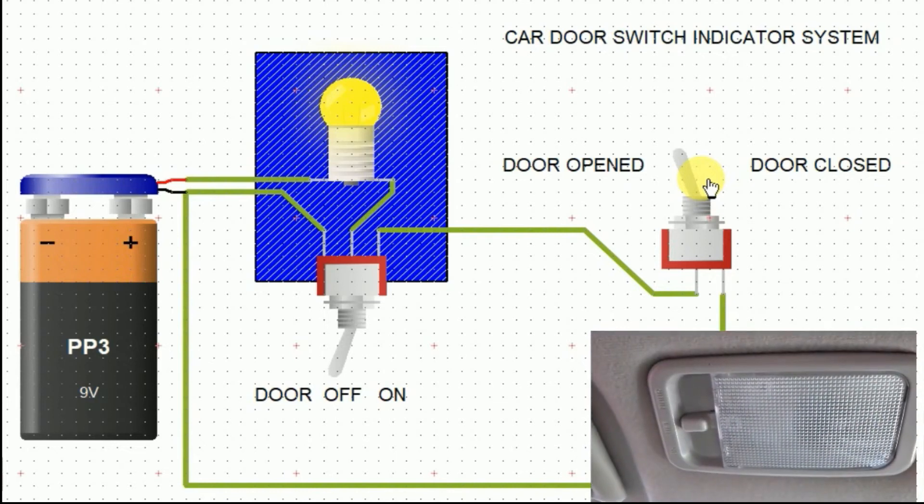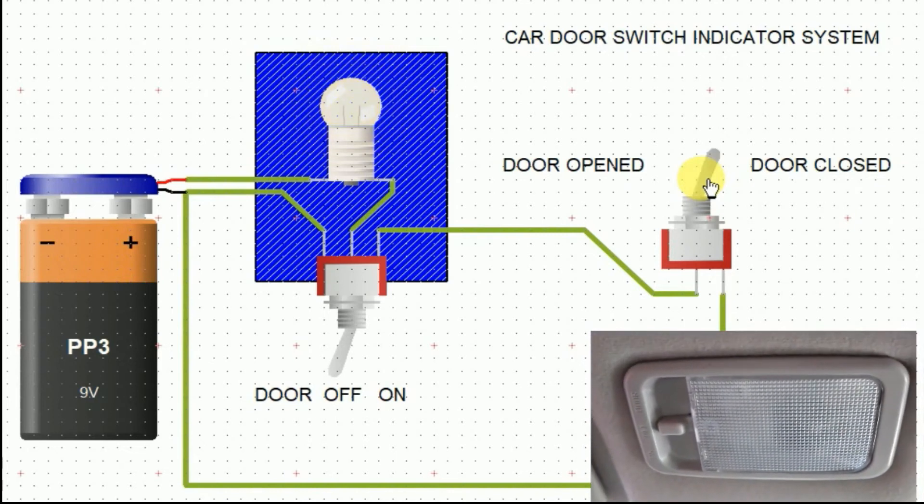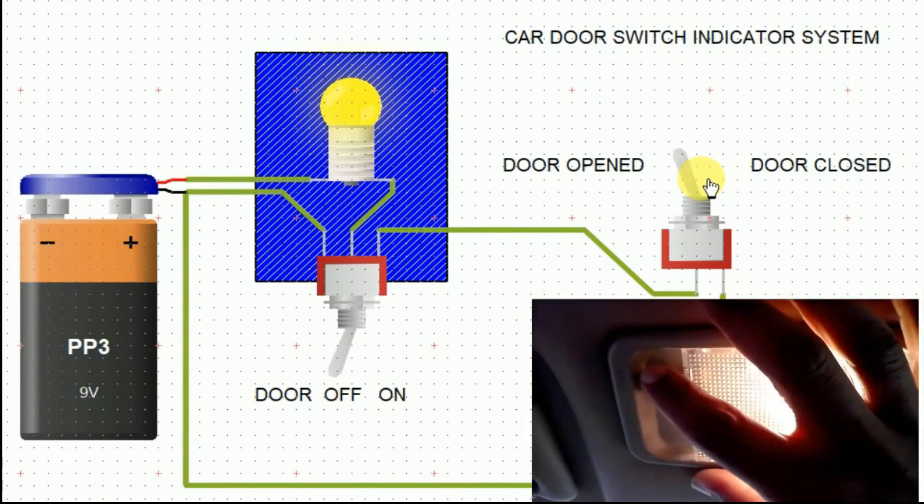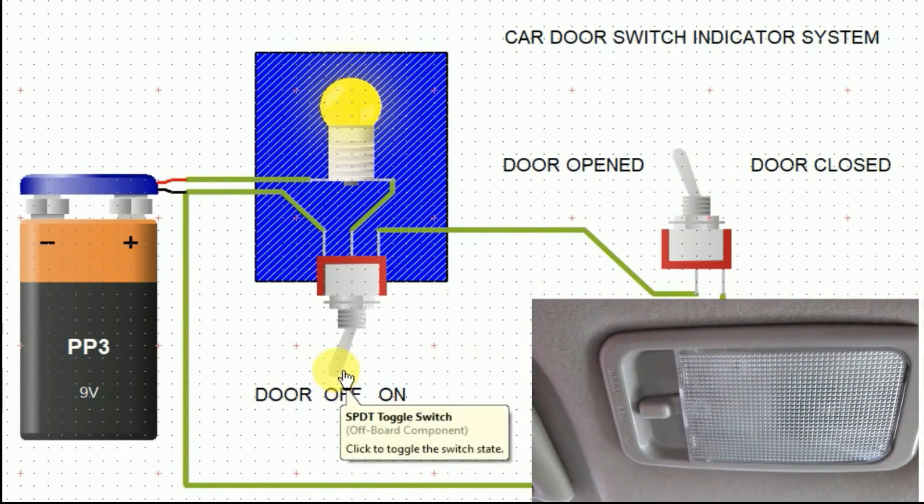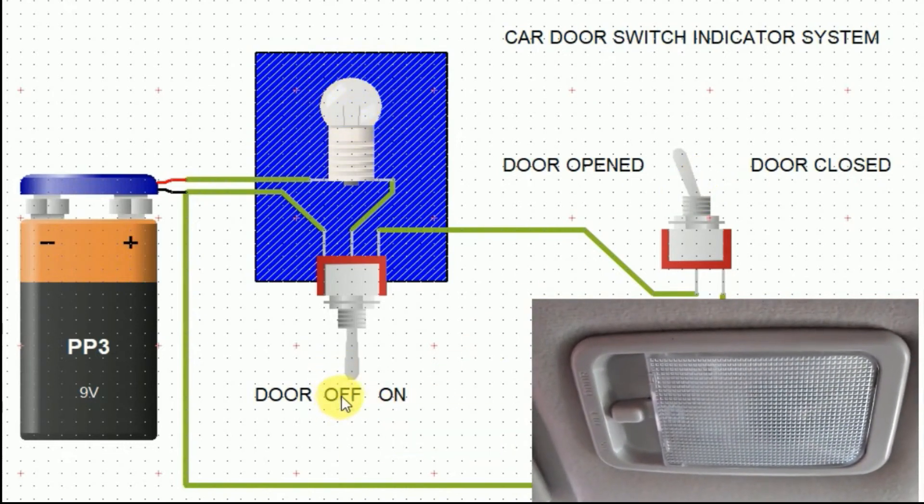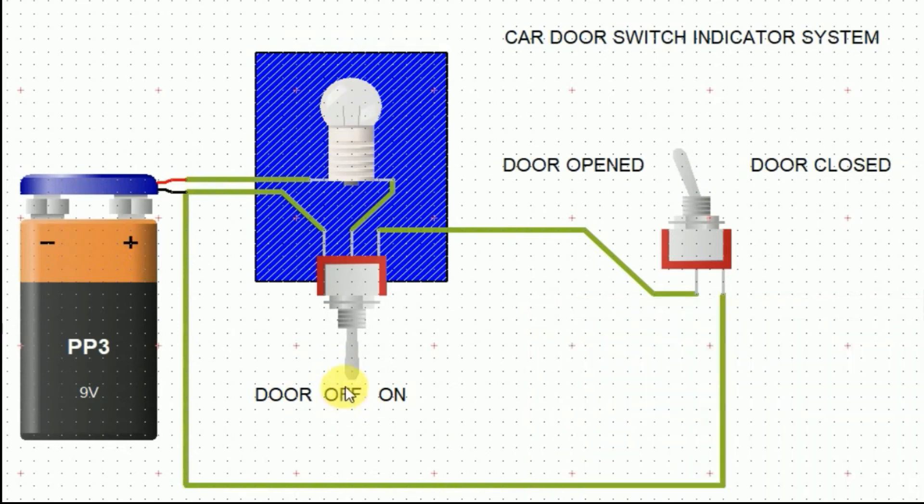No matter if the door is open or closed, when the dome light switch is in the off position, the dome light remains off. On the other hand, when the dome light switch is in the on position, the dome light remains on regardless of the door position.